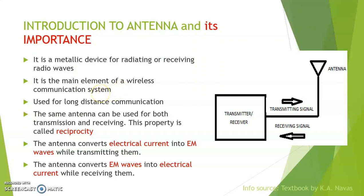The main property of an antenna is called reciprocity — the same antenna can be used for both transmission and receiving. The antenna converts electrical current into electromagnetic waves while transmitting, and also converts electromagnetic waves back into electrical current while receiving.